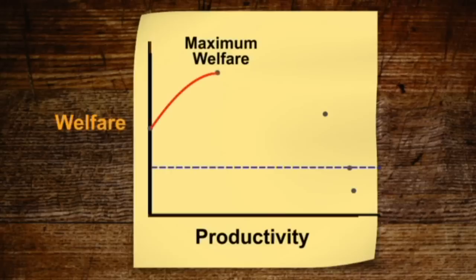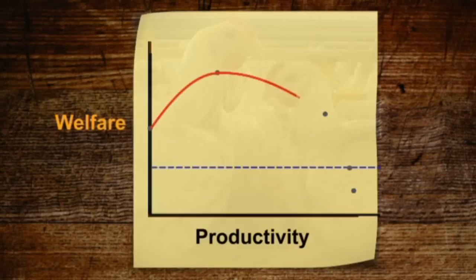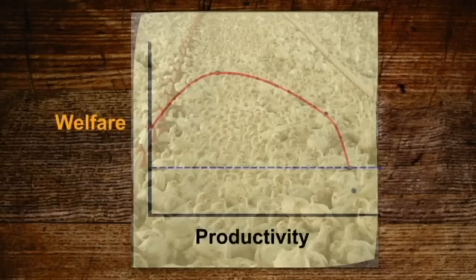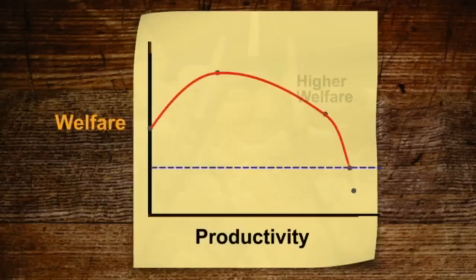However, if animals are driven to produce more — such as through intensive selection for fast growth or yield — their behaviour is restricted and they become susceptible to disease. Their welfare can be minimal, which is often the standard accepted for minimum legislation. We need to achieve a balance that maximises animal welfare in commercial production. Many animals in intensive systems fall short of where they should be for good welfare.